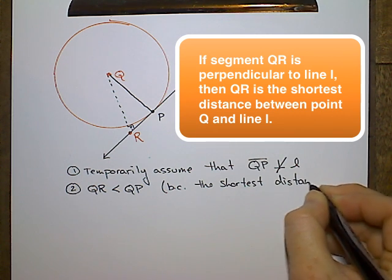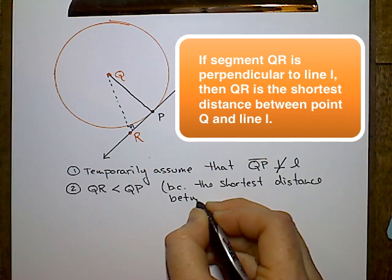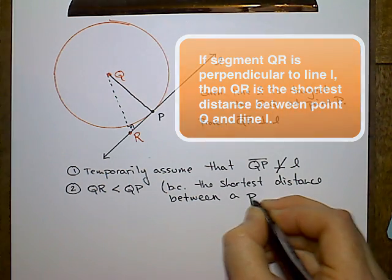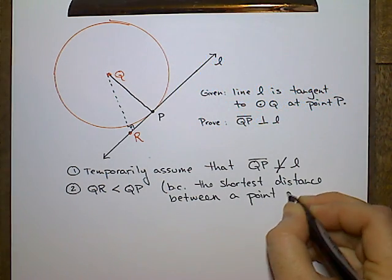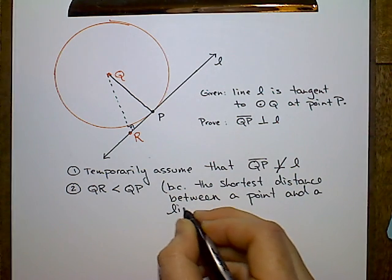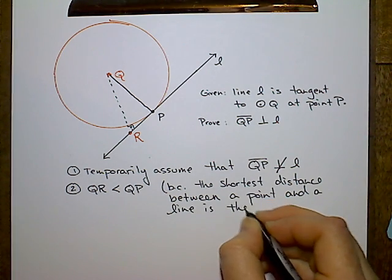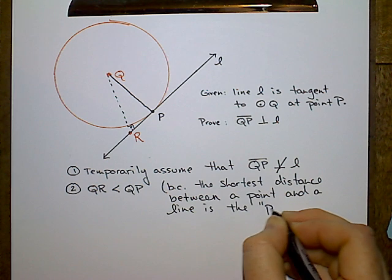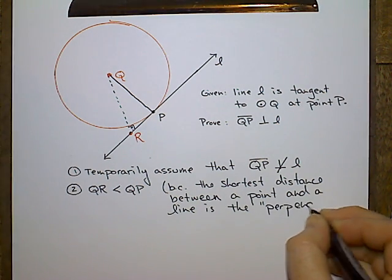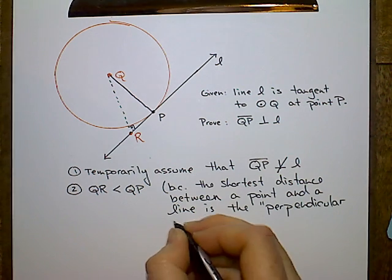So you have to be really organized here. Since we temporarily assumed QP is not perpendicular to L, then there must be a segment QR that is perpendicular to L, and QR must be the shortest distance between Q and the line. Therefore, QR must be less than QP.